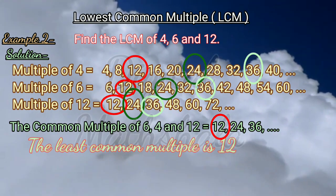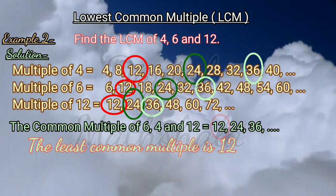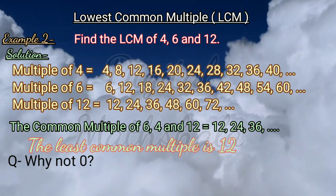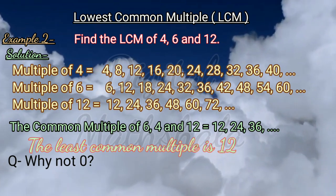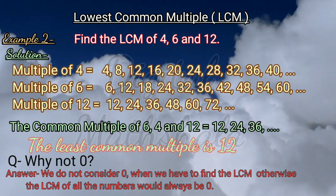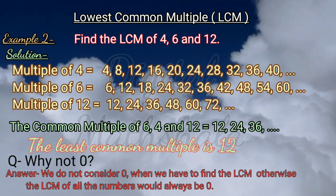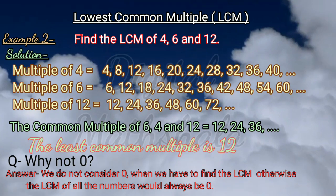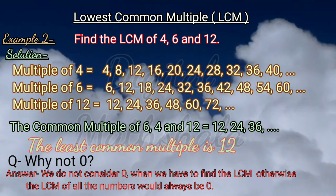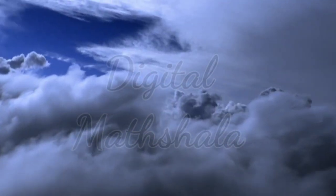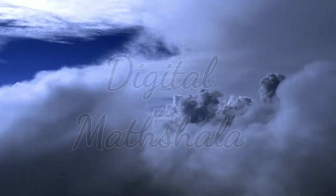Now children, you must be wondering why we did not list 0 as a multiple for any of the numbers. That is because we do not consider 0 when finding the LCM, as otherwise the LCM of all numbers would always be 0. Remember, it is important to learn the tables to find the multiples and the least common multiples.